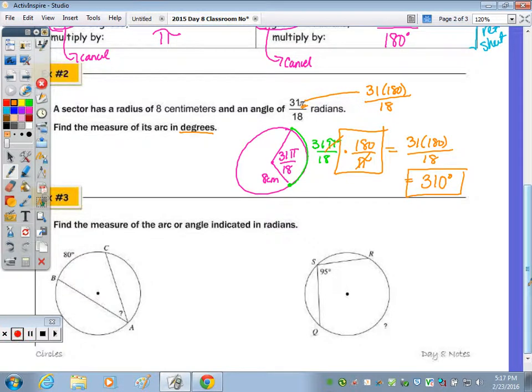Number three, find the measure of the arc or the angle indicated in radians. Well, let's first find it in degrees. So inscribed angle, vertex on the circle, it's half, so this is 40 degrees. Another inscribed angle, so we're going to go backwards, we're going to double that to find the arc, so this is 190 degrees.